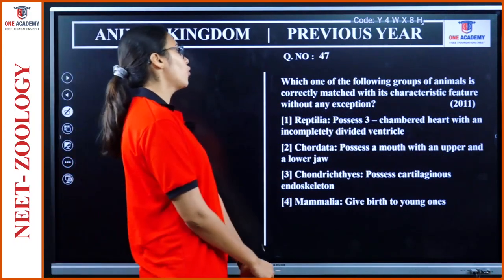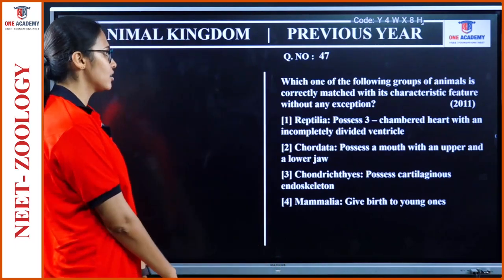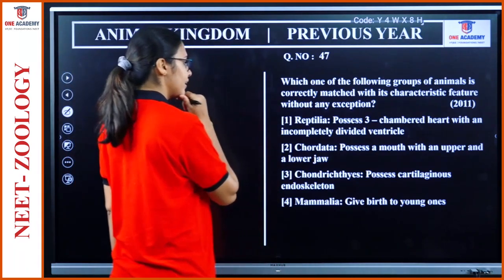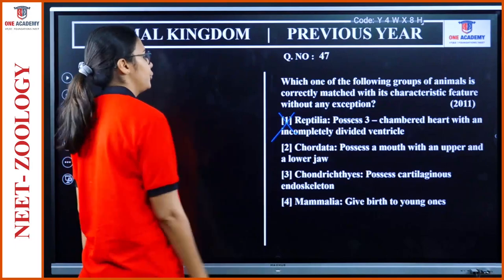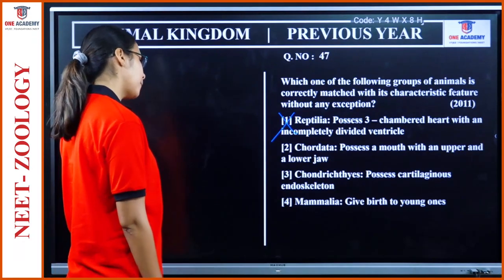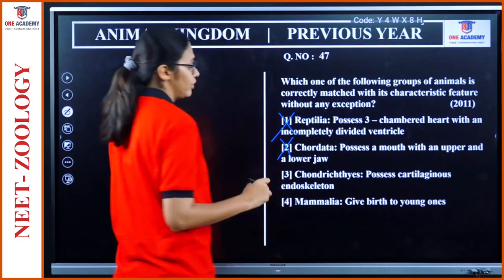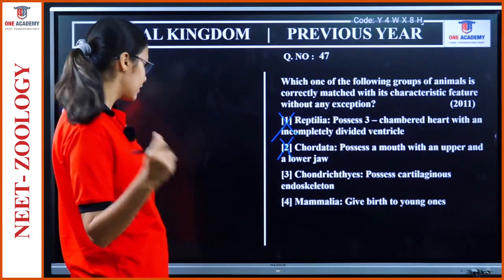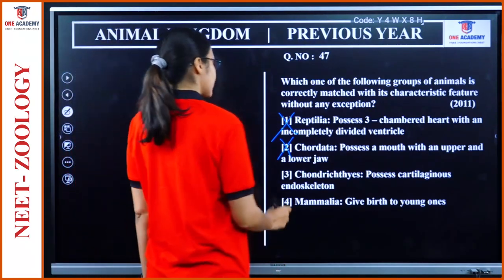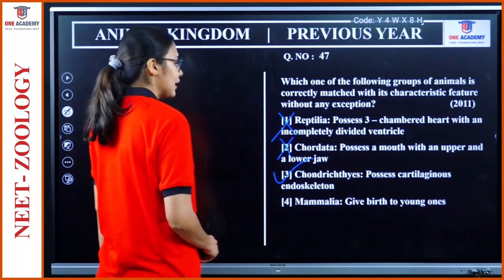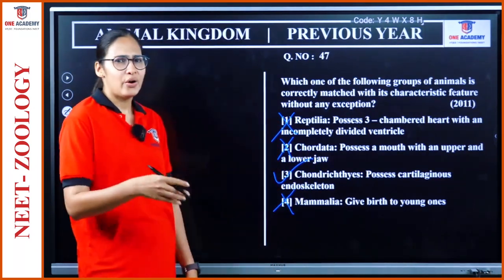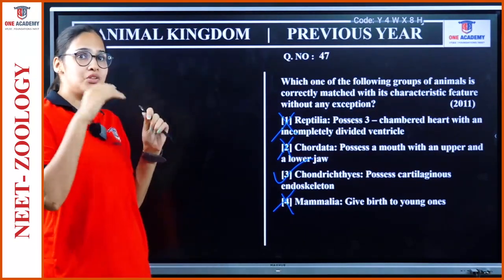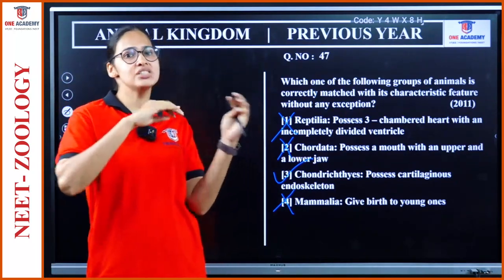Question 47: 'Which group is correctly matched without any exception?' Reptilia — three-chambered heart with incompletely divided ventricle — exception is crocodile. Chordata — mouth with upper and lower jaw — no, Acnata has no jaw. Chondrichthyes — cartilaginous endoskeleton — yes, correct. Mammalia — give birth to young ones — not everyone; some are oviparous. So Chondrichthyes possess cartilaginous endoskeleton is correct without exception.